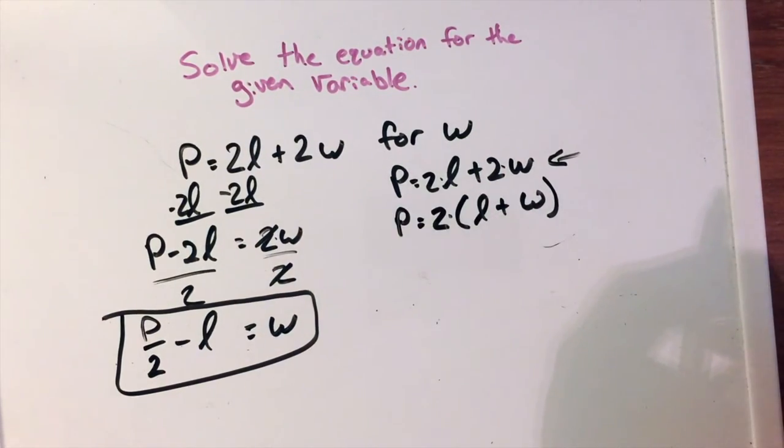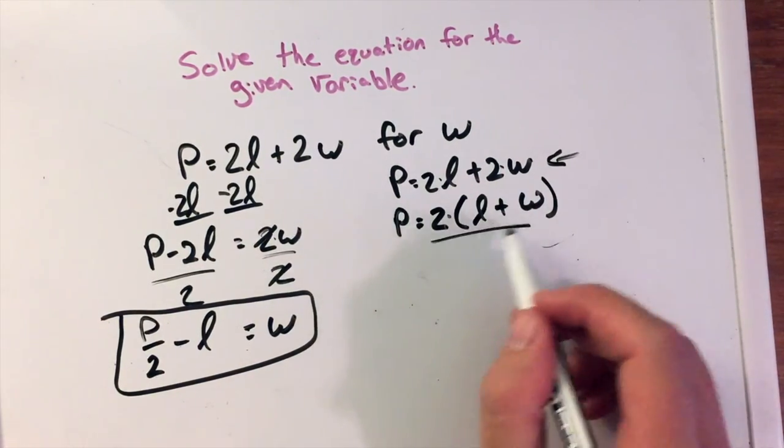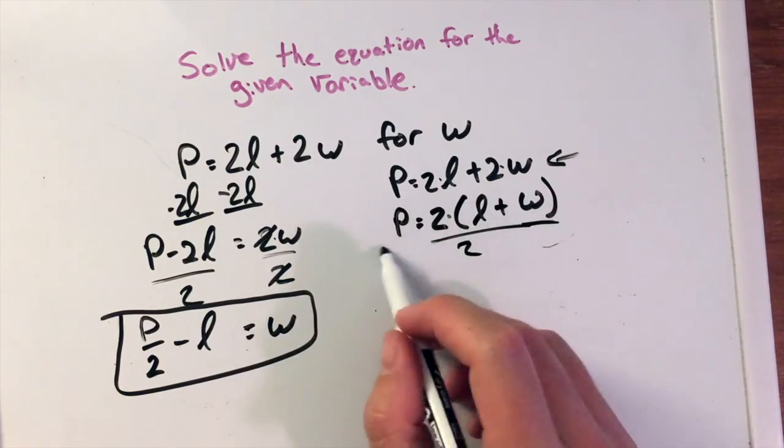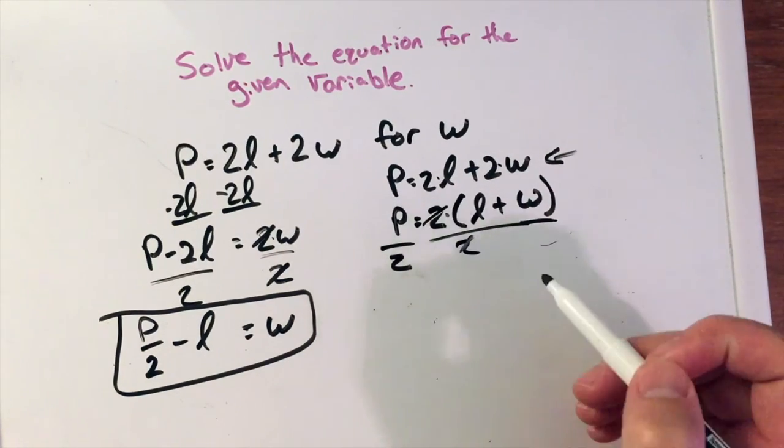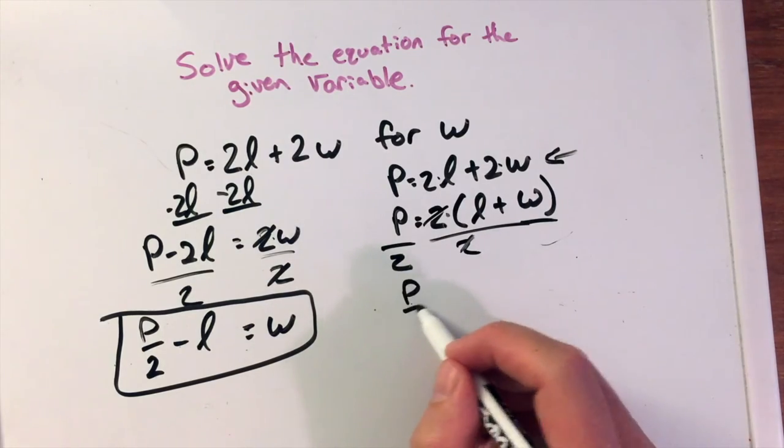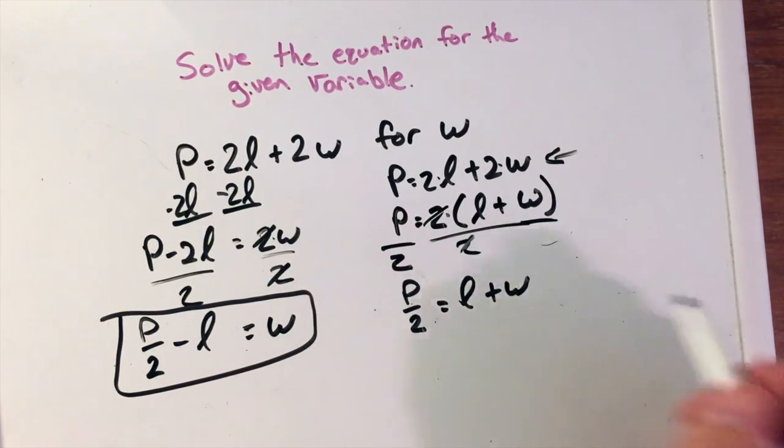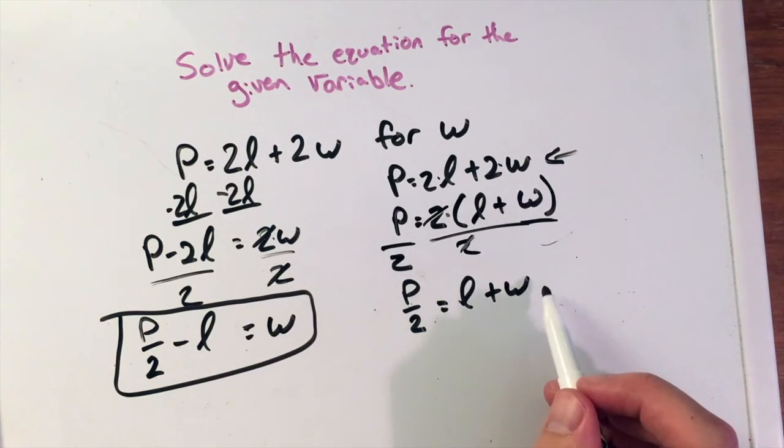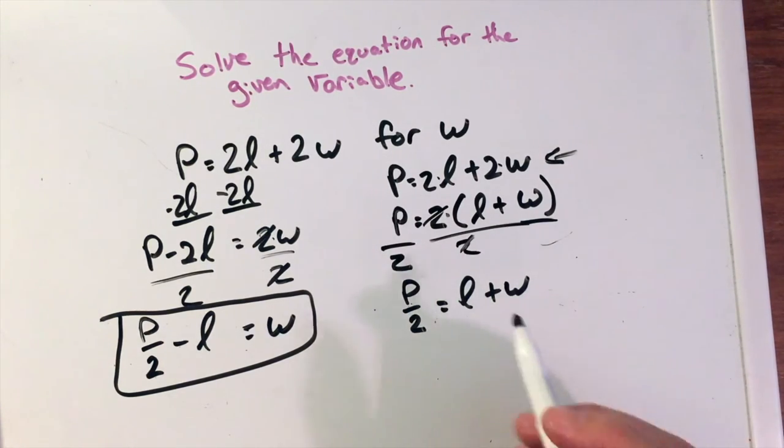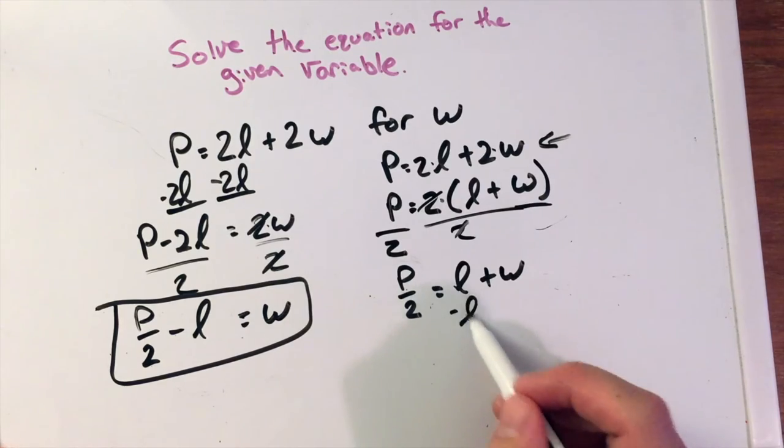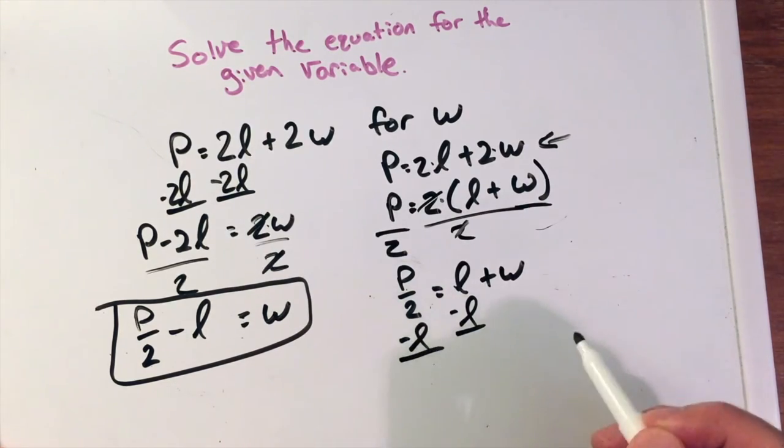Now I have multiplication. So now I'm going to do the opposite of multiplication. I can divide the 2 to both sides. The 2 cancels. And now I'm left with P over 2 equals L plus W. We have a positive L here and we still want to get W by itself. That's our goal variable. So I would subtract an L to both sides.